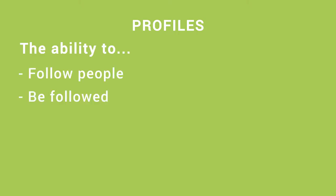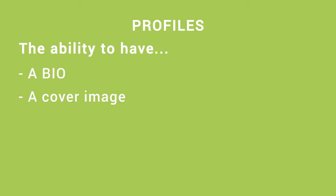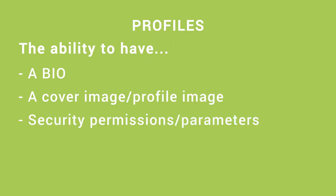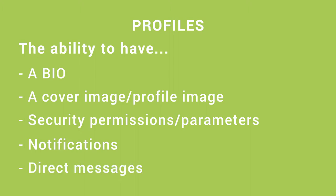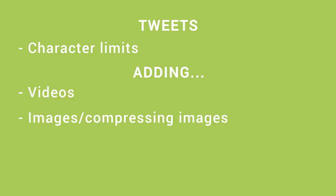Think about this — we use Twitter as a great example. You might assume you need a platform that sends out tweets and has profiles, but let's really think about that. Profiles include the ability to follow people, have them follow you, a bio, a cover image, a profile image, security permissions, parameters, and notifications. Then there's direct messaging, the ability to deny direct messages, character limits on tweets, adding videos, images, compressing images, multiple images, polls, links, comments underneath a tweet, and searching a feed through an algorithm. All of these things are multiple features and functionalities — what seemed like a simple idea has an enormous amount of detail behind it.